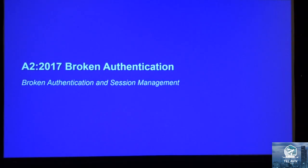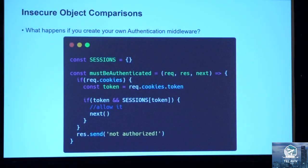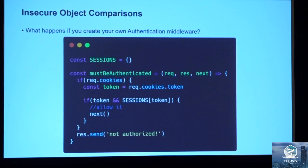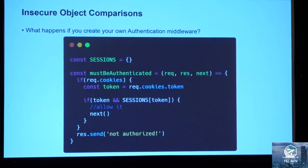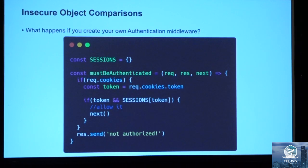Now we are going to move on to broken authentication. One of my colleagues, Aminveer Sangha, reviewed an Internet of Things application in China built with Node using the Express framework. They wanted to preserve memory space on the device by not using custom middleware or authentication like Passport — they wanted to write their own because it would be cheaper. What we have here is a simple object called sessions and a mustBeAuthenticated middleware which takes in request, response, and next.